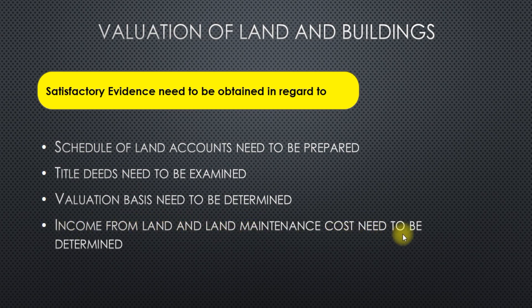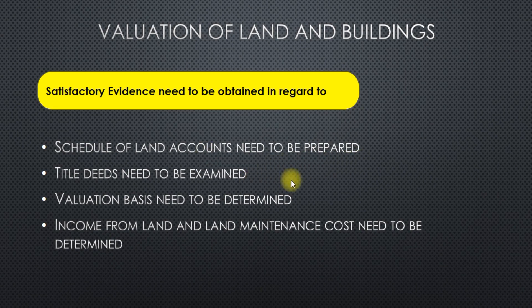Income from land and land maintenance costs need to be determined. The most important task of the auditor in relation to the audit of land is to determine ownership of the land and its proper valuation. The auditor should examine the title deeds related to the property. If the property is mortgaged to a bank or in general, the auditor should get a certificate from the mortgagee.